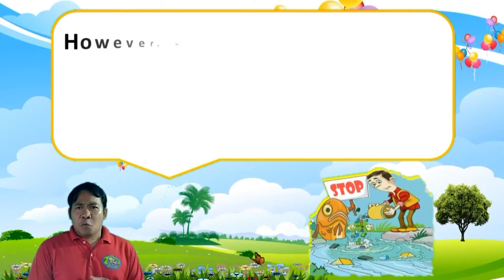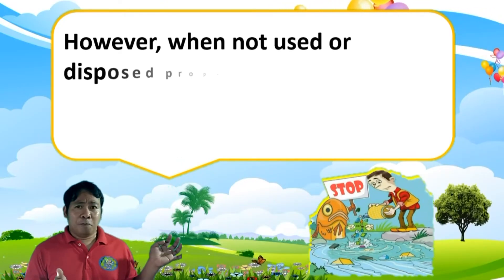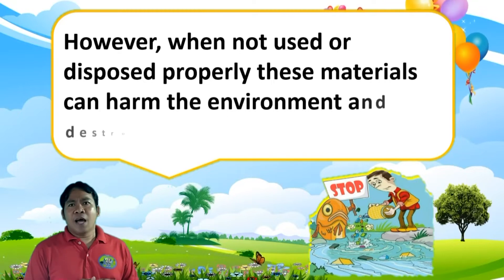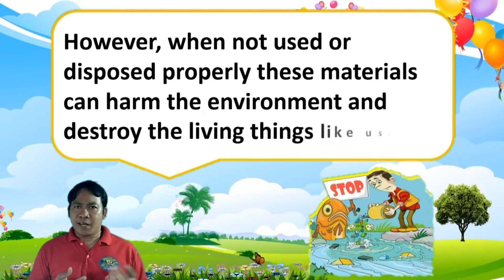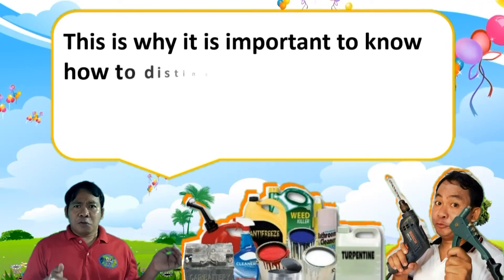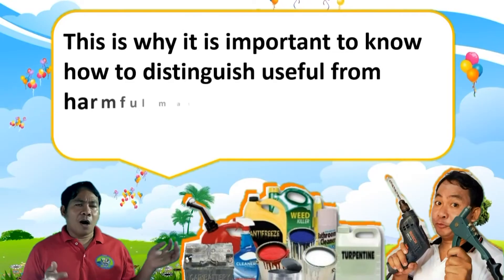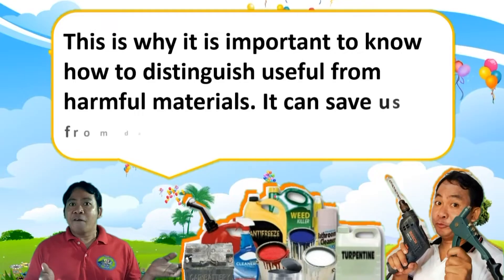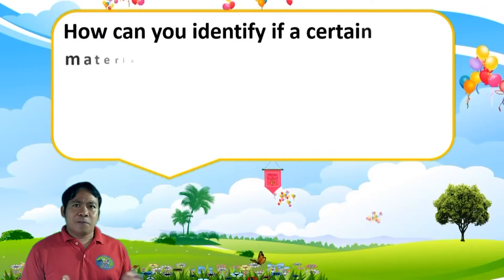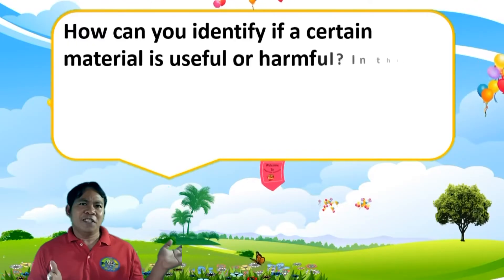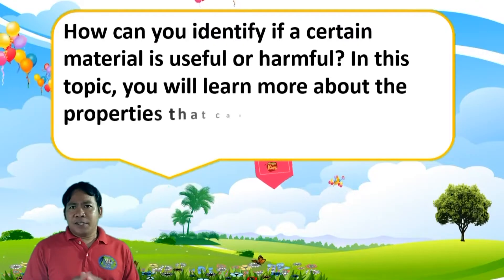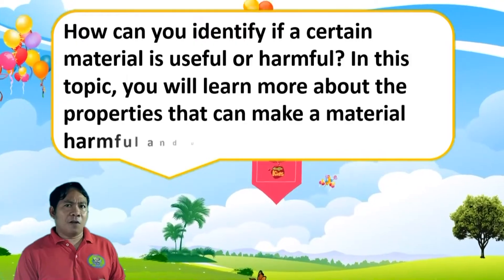However, when we do not use or dispose of materials properly, these materials can harm our environment and destroy living things like us. This is why it is very important to know how to distinguish useful from harmful materials — it can save us from danger and distress. In this topic, you will learn more about properties that can make a material harmful or useful.